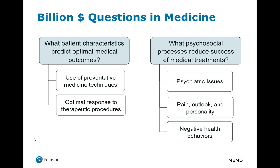I'm going to start with some basic questions and increase the detail as I go. What are the patient characteristics that predict optimal medical outcomes — such as people's ability to use prevention and respond best to therapeutic procedures? On the other hand, what are the psychosocial processes that might reduce the success of medical treatment? Are they found in psychiatric issues, attitudes toward pain, outlook toward the future, personality, or negative health behaviors?